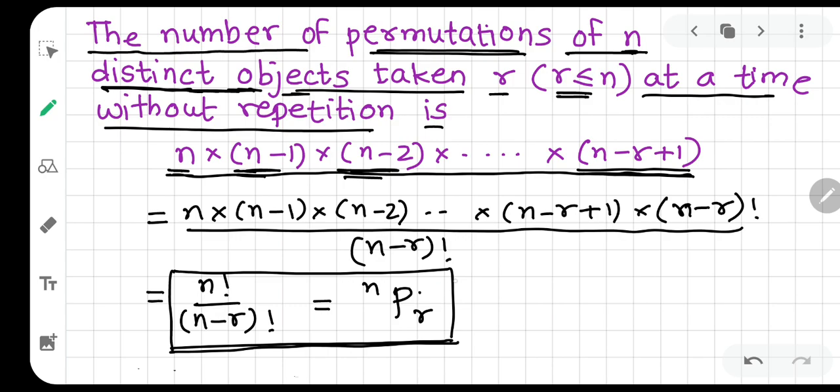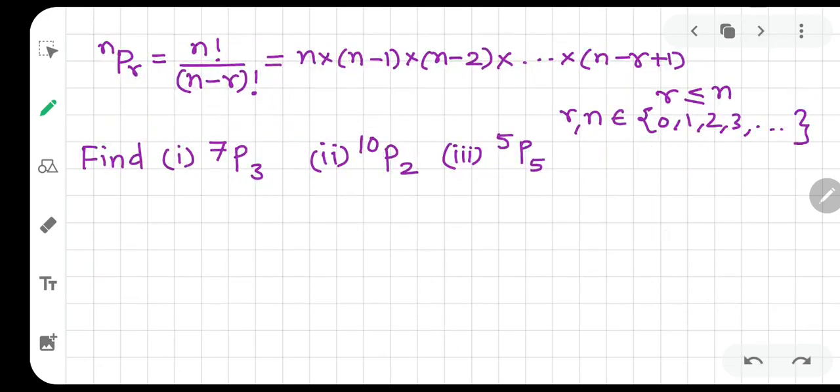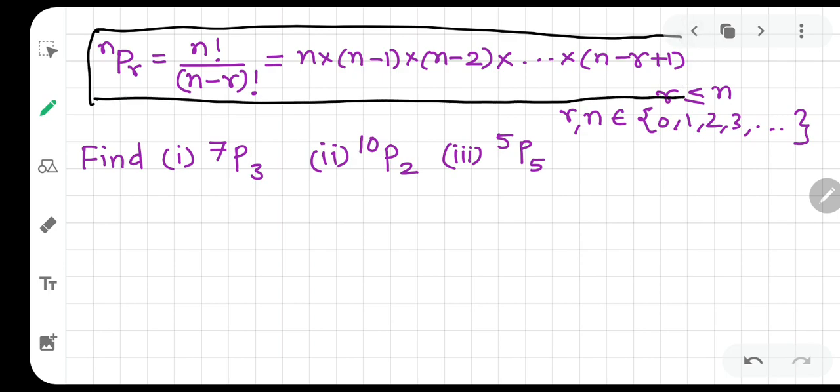This is the number of permutations. P is for permutations. So the number of permutations of n distinct objects taken r at a time. This is the formula: nPr. The simplest way is to start with n, then write n-1, n-2, and so on for r terms. For example, suppose you want to find 7P3.